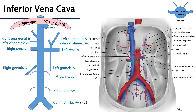The inferior vena cava begins as the union of two vessels, the common iliac veins, at approximately the fifth lumbar vertebra, and it ascends the totality of the abdomen and moves through the diaphragm at the caval opening at approximately the eighth thoracic vertebral level.